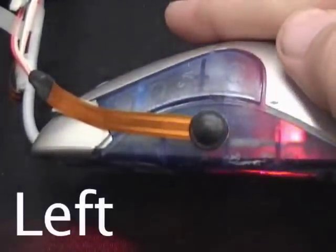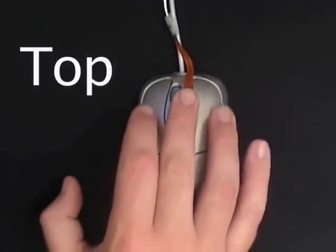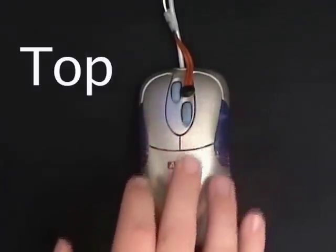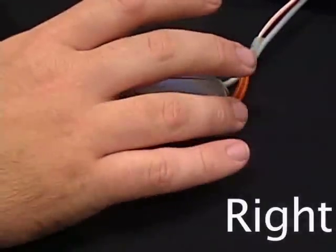In our first study, we tested three different locations for installing pressure sensors: one on the left side of the mouse for the thumb, one on the top of the mouse for the middle finger, and one on the right side for the ring finger.